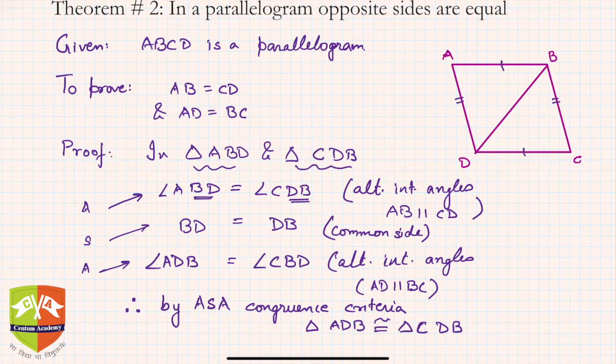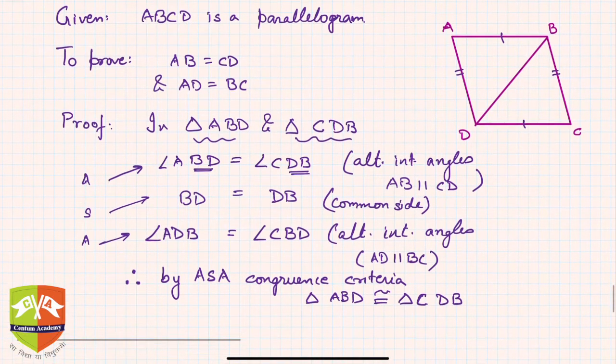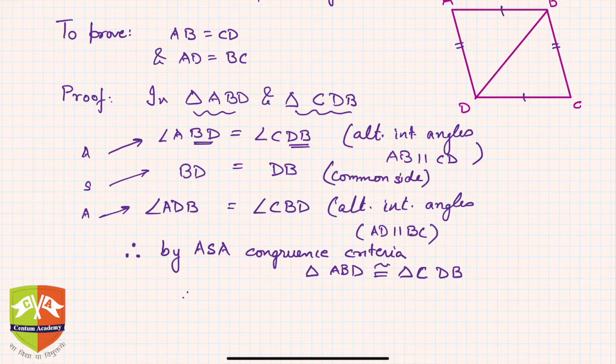I was making the same mistake, so you have to be very careful. Triangle ABD is congruent to CDB. Now, therefore, AB must be equal to CD. Why? You can write corresponding parts of congruent triangles (CPCT).